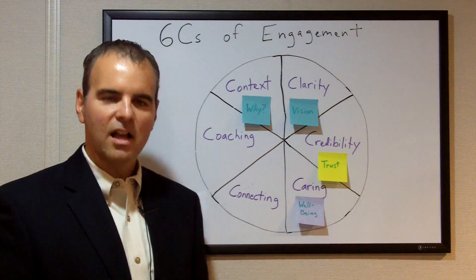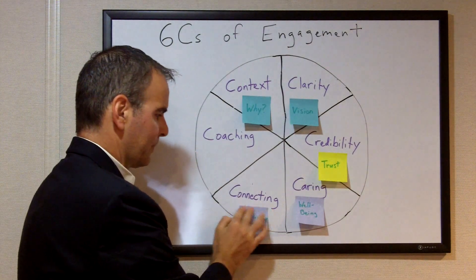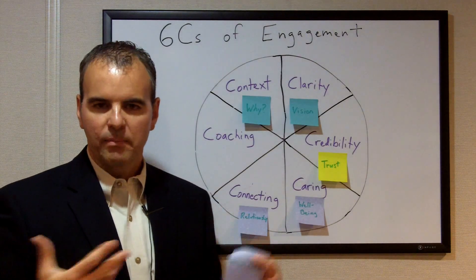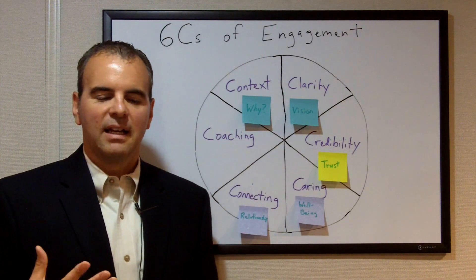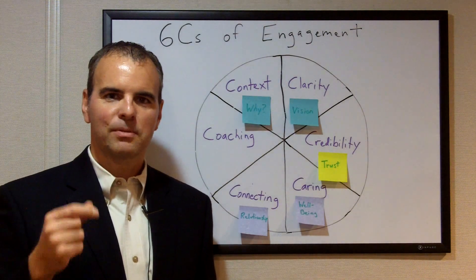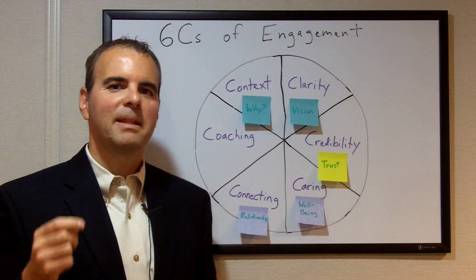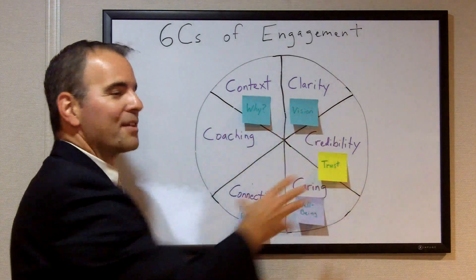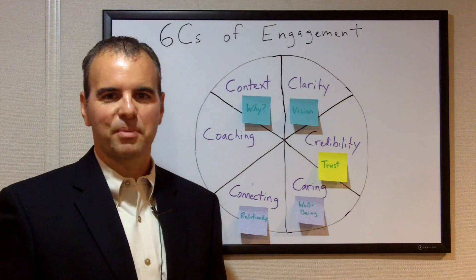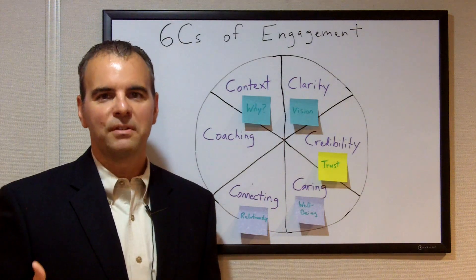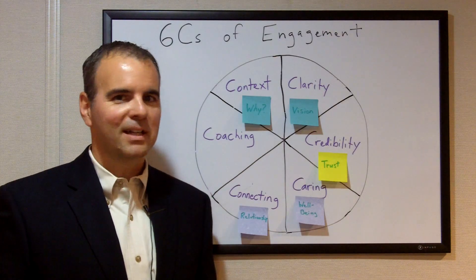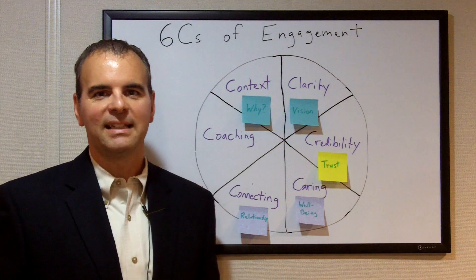Our next C is connecting, and this is all about relationship. Do I allow the people on my team to have a real relationship with me — a relationship between two human beings? This is very easy to see the importance of in terms of your leadership within your family. You can be the best parent and have all these other C's in place, but if you are not really making yourself available to be in real relationship with your kids, your kids are not going to follow your leadership. They're going to start going off in other directions, some of which may not be healthy. And you've heard it said, kids spell love funny — they spell it T-I-M-E.